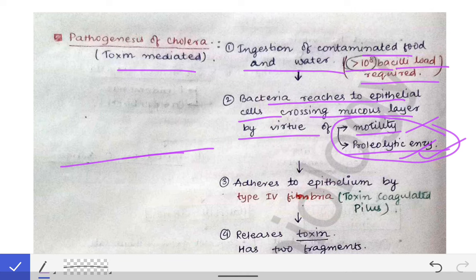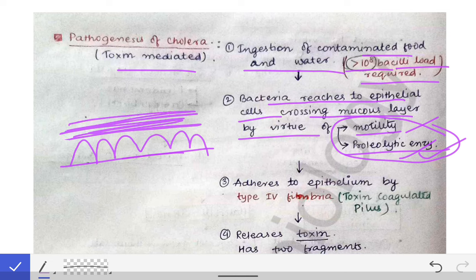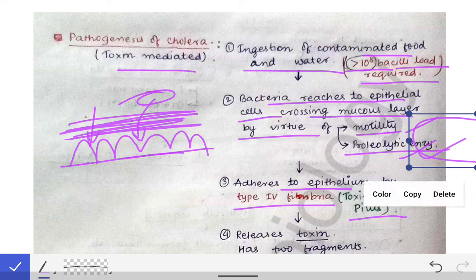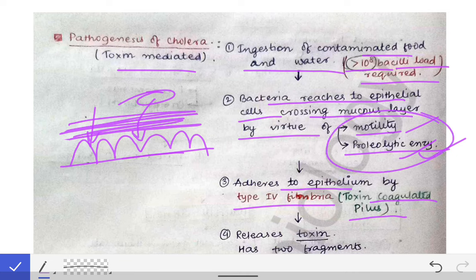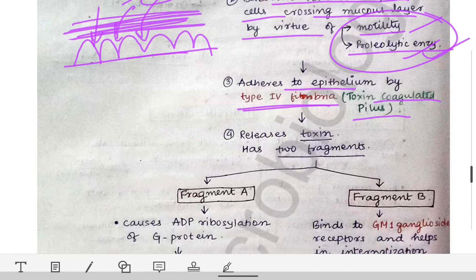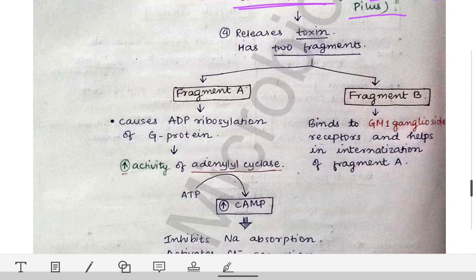After crossing the gastric mucosal barrier, the bacteria adhere to the epithelial cells using type 4 fimbriae, also called the toxin-coregulated pilus. After adhering to the epithelial cells, the bacteria release their toxin. This toxin has two fragments: fragment A and fragment B.